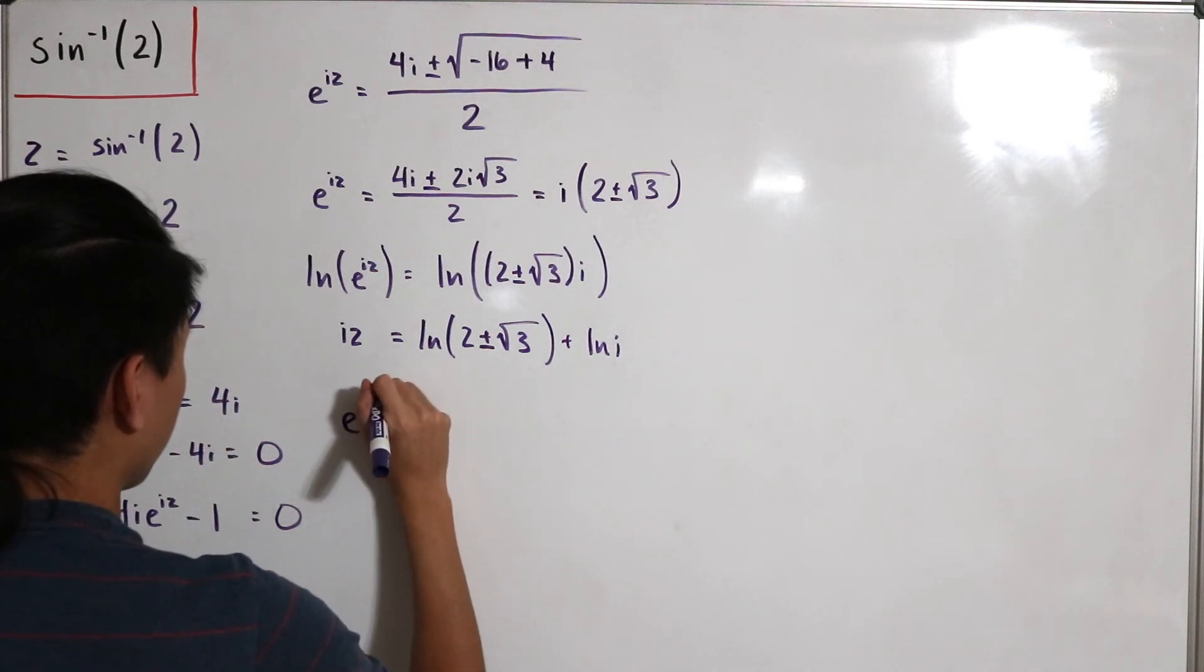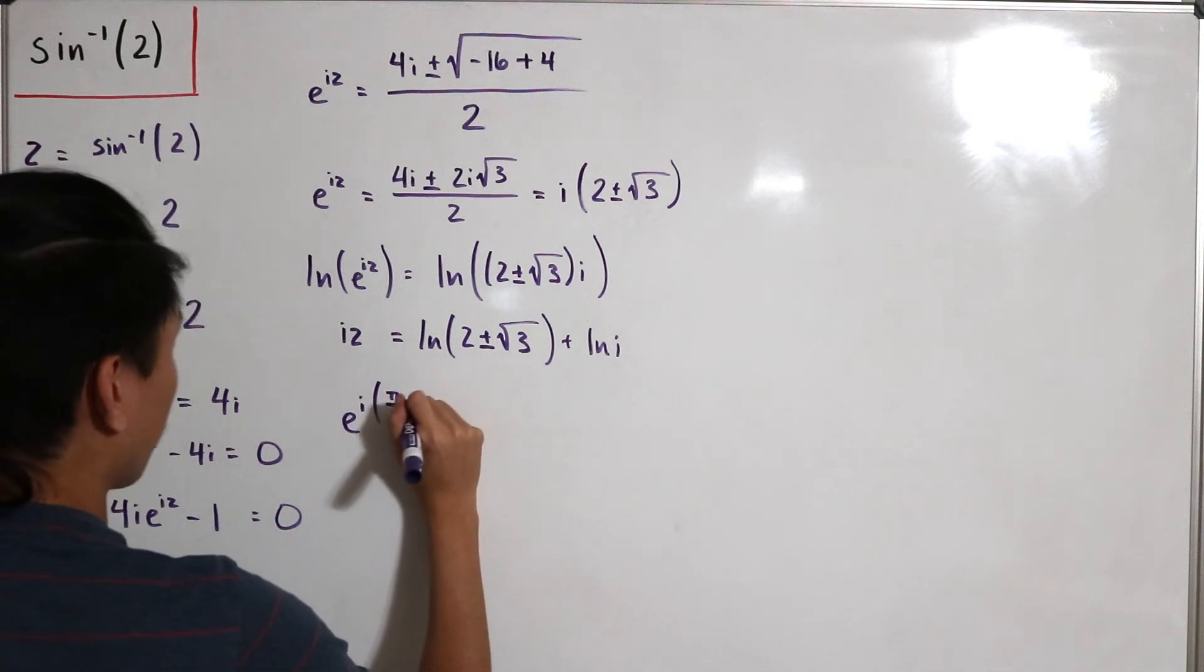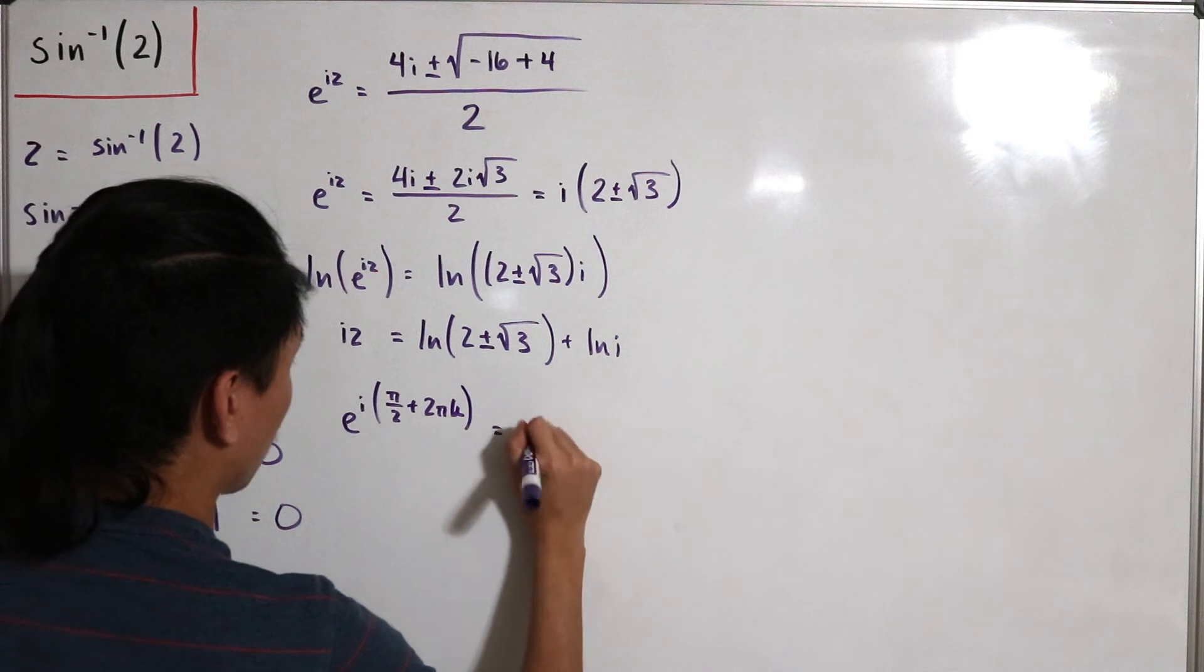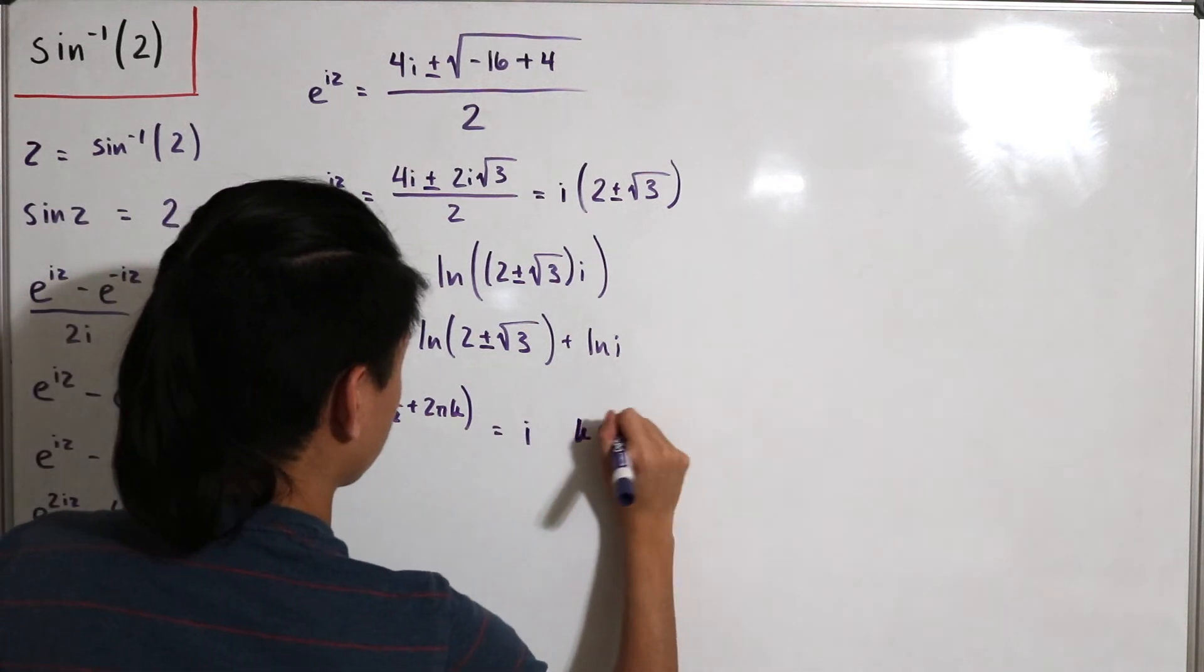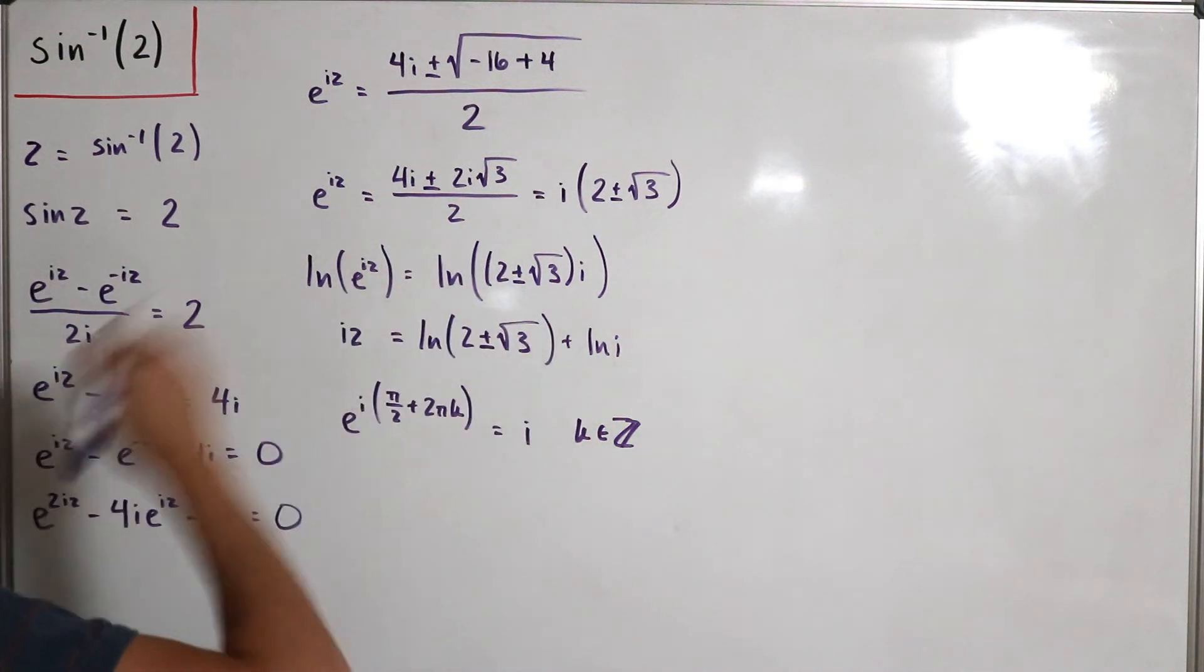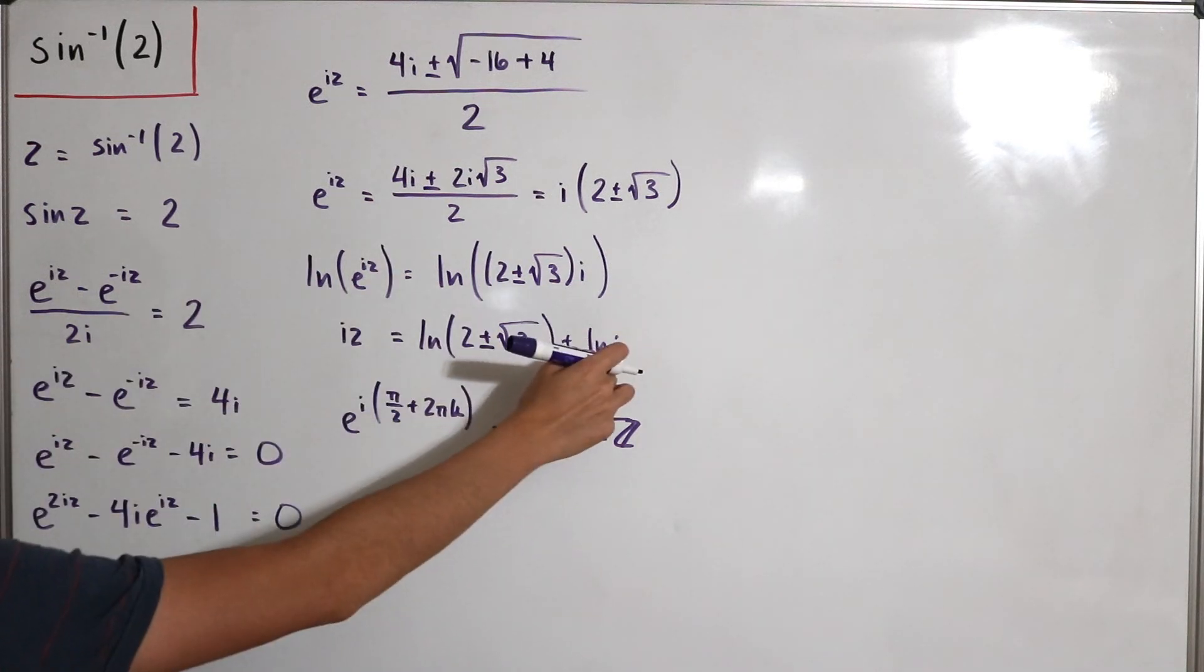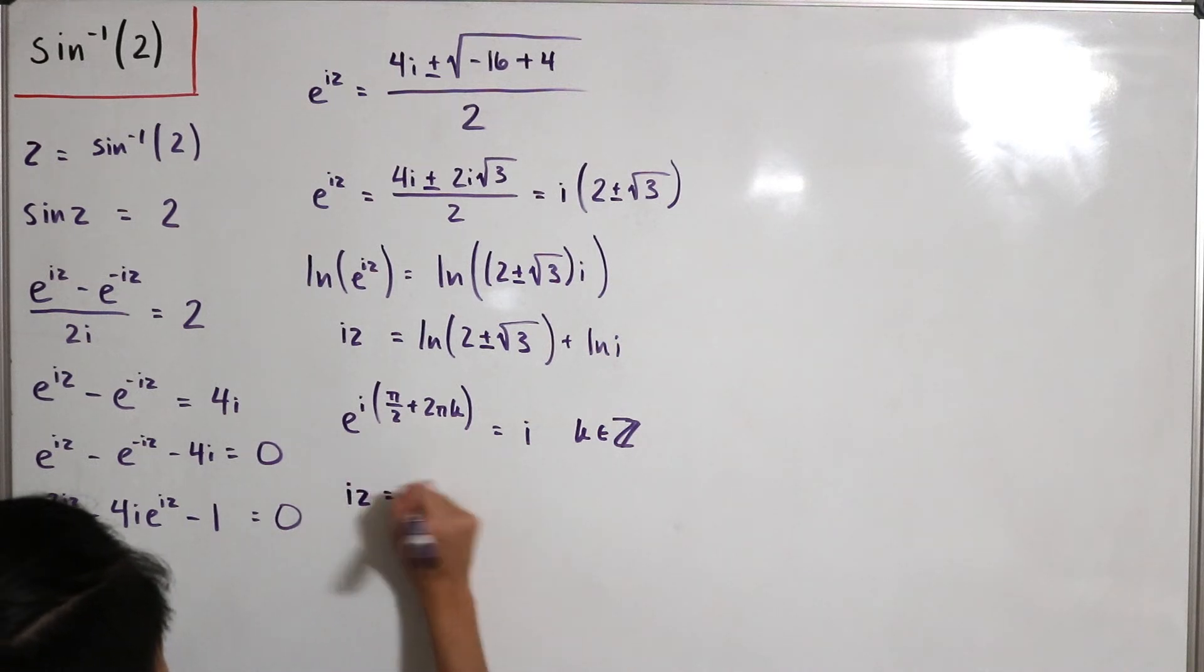then plus 2 pi times k is equal to i, for k can be some integer. Similarly, because of the whole rotation, it's always going to equal i for every pi over 2 add or subtract one full rotation. So it's always going to equal i. So I can actually just substitute this back into here. So we have i times z then equals